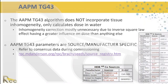The TG-43 algorithm does not incorporate any tissue inhomogeneity — it only calculates dose in water. The general clinical perception is that inhomogeneity correction is mostly unnecessary due to the inverse square law having much greater influence on dose. With advances in automated treatment planning and inverse optimization, it is now easier to include heterogeneity corrections if centers choose to, but we want commissioning to be at least consistent with the TG-43 formulas.